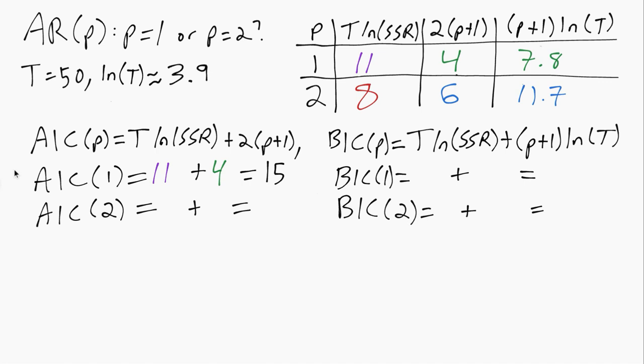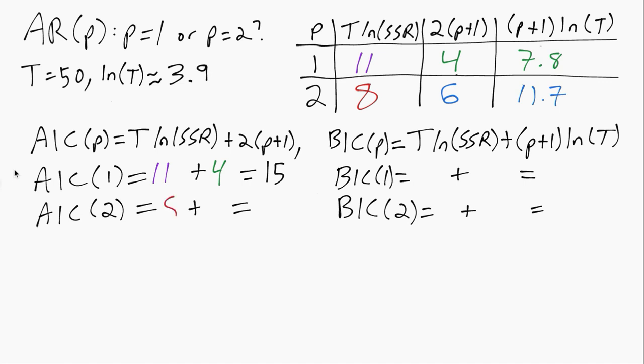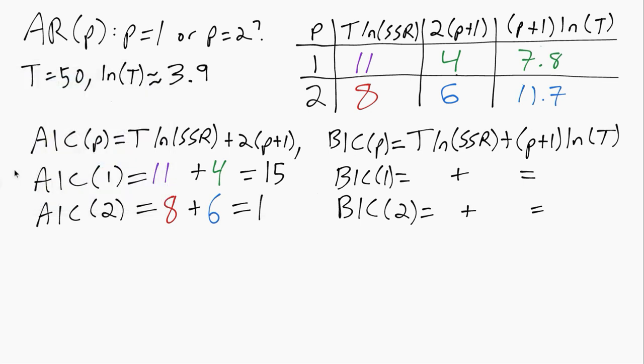So that's the value of the AIC for the P equals 1 or the first order autoregressive model. And similarly for P equals 2, we can fill in the two terms from the two terms from up in our table. 8 plus 6, now we get 14.